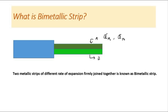When we heat the strip, suppose we assume that alpha A is larger than alpha B, which means the expansion of A would be larger than the expansion of B. So A would try to become longer compared to B, but it is not allowed to go straight because both are firmly fitted together. Instead of one becoming bigger and the other smaller, this is not allowed because their ends should always remain joined together.